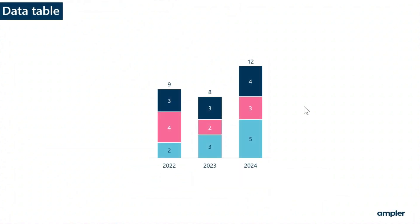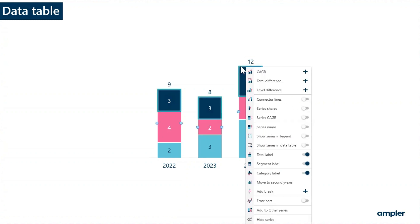An alternative way to add series to a data table is to select and right click on a series and toggle on show series in data table. Afterwards, you can select hide series if you want to have it only shown in the data table.